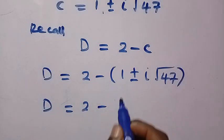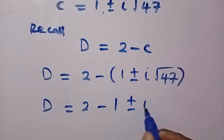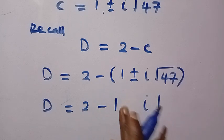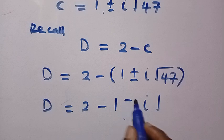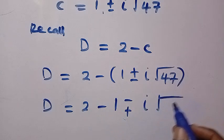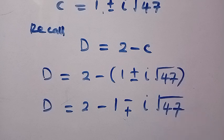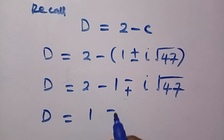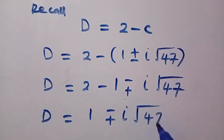That is 2 minus 1 plus or minus. When we open this with parentheses, minus times plus is minus, minus times minus is plus, square root of 47. So we have D equals 2 minus 1, that is 1, then minus plus or minus i root 47. So this is the value of D that we got here.